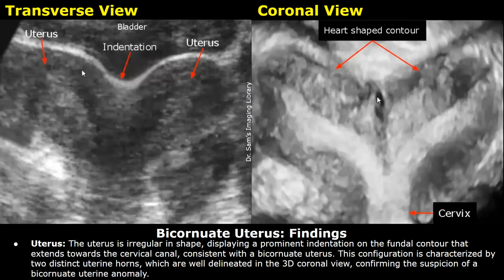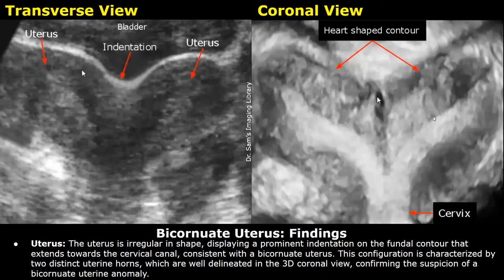These are the findings. Uterus: the uterus is irregular in shape, displaying a prominent indentation on the fundal contour that extends towards the cervical canal, consistent with a bicornuate uterus. This configuration is characterized by two distinct uterine horns, which are well delineated in the 3D coronal view, confirming the suspicion of a bicornuate uterine anomaly.